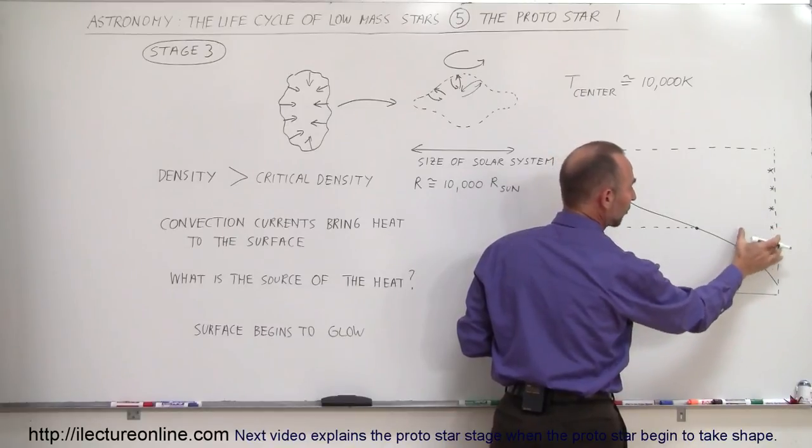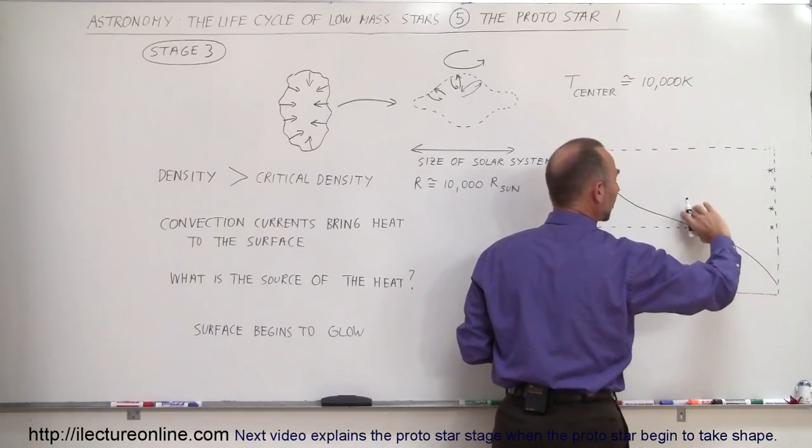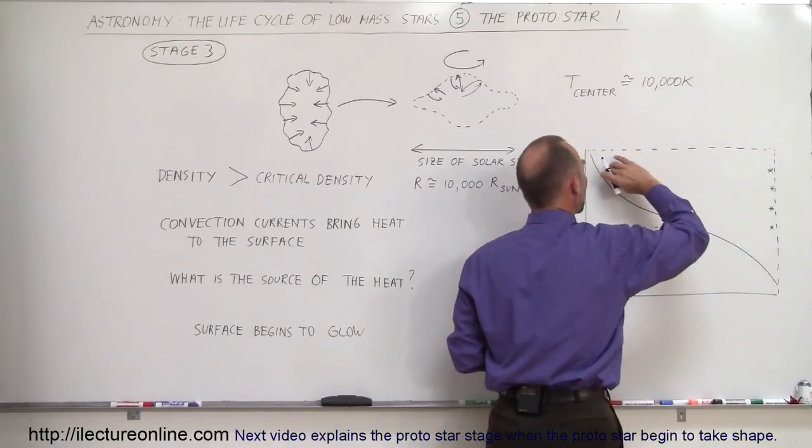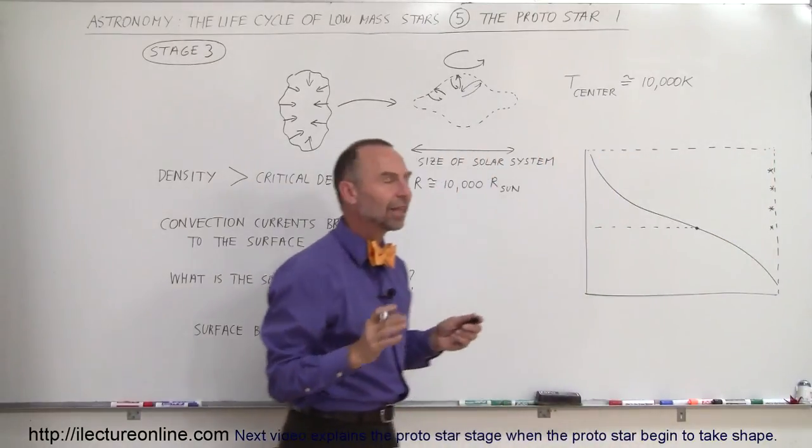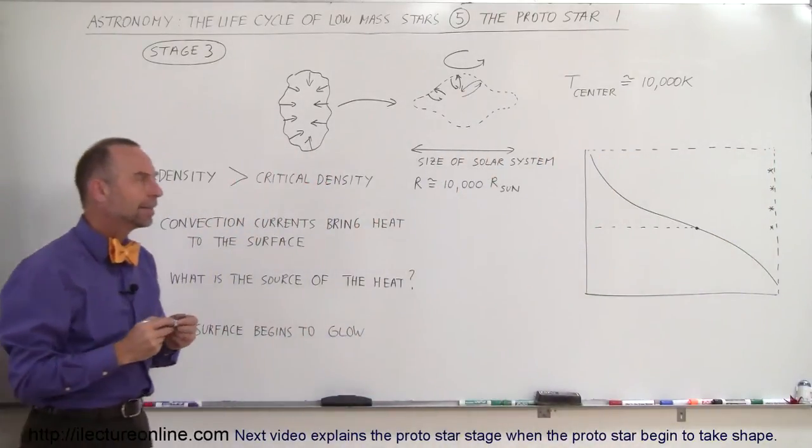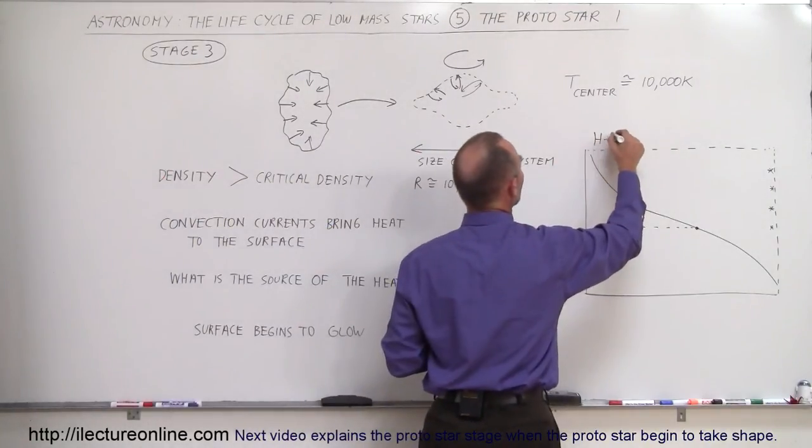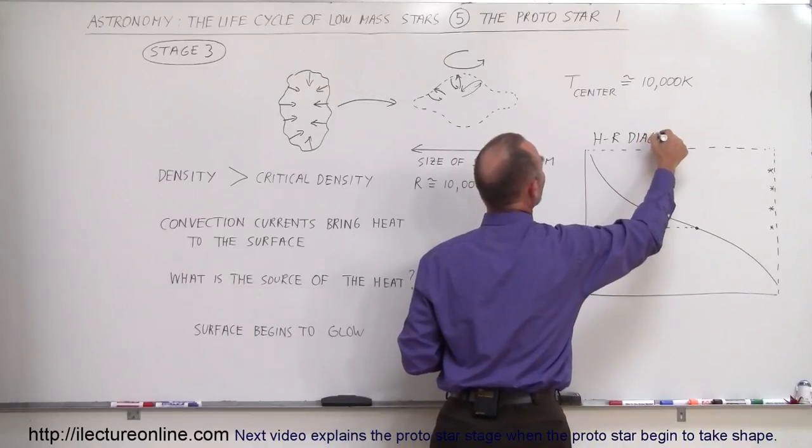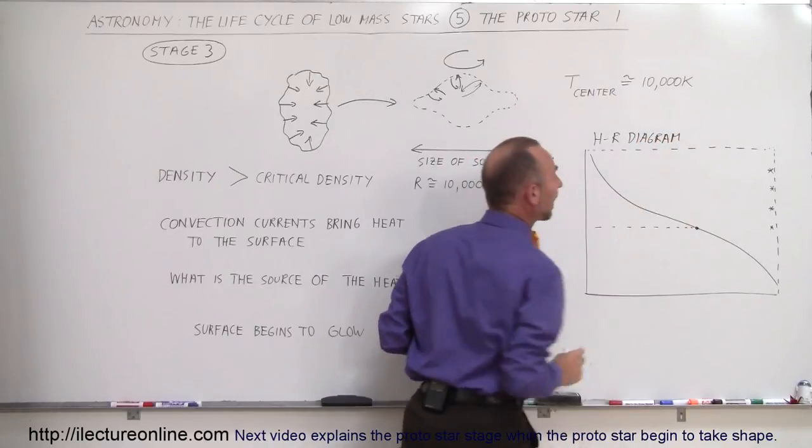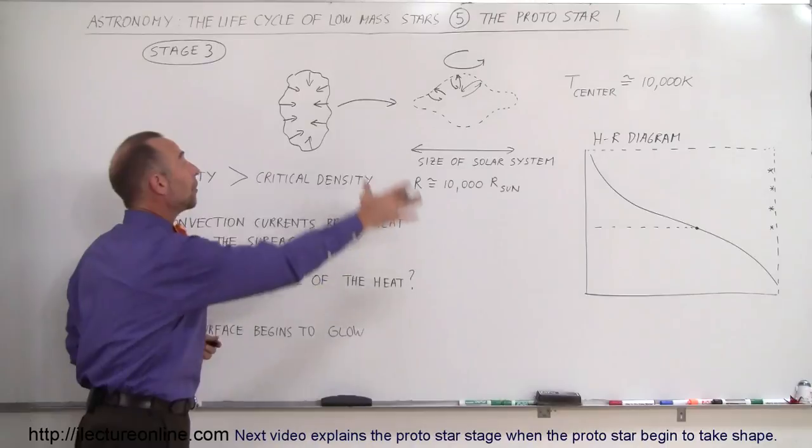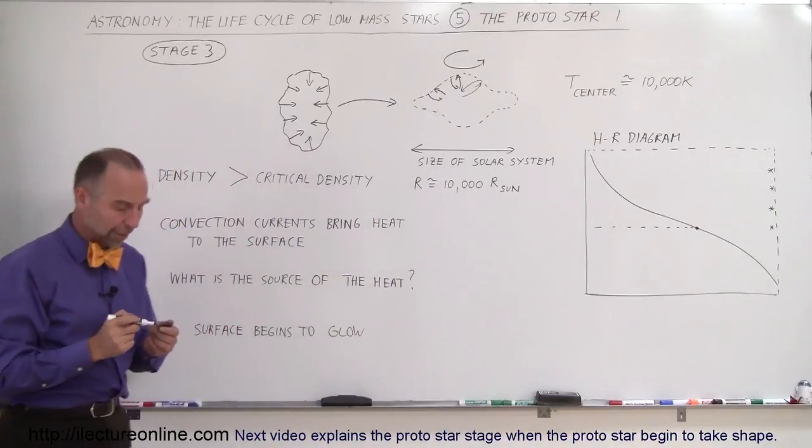Low mass stars would eventually end up on the main sequence here, higher mass stars here, and very large mass stars over there. That's where they would appear first on the HR diagram. This would be an HR diagram, and protostars would appear somewhere on the right side, depending upon how much mass they encompass when they're beginning to form.